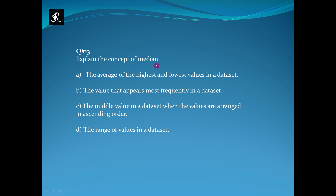Explain the concept of median. The options are: The average of the highest and lowest values in a data set. The value that appears most frequently in a data set. The middle value in a data set when the values are arranged in ascending order. The range of values in a data set. The right option is option C.